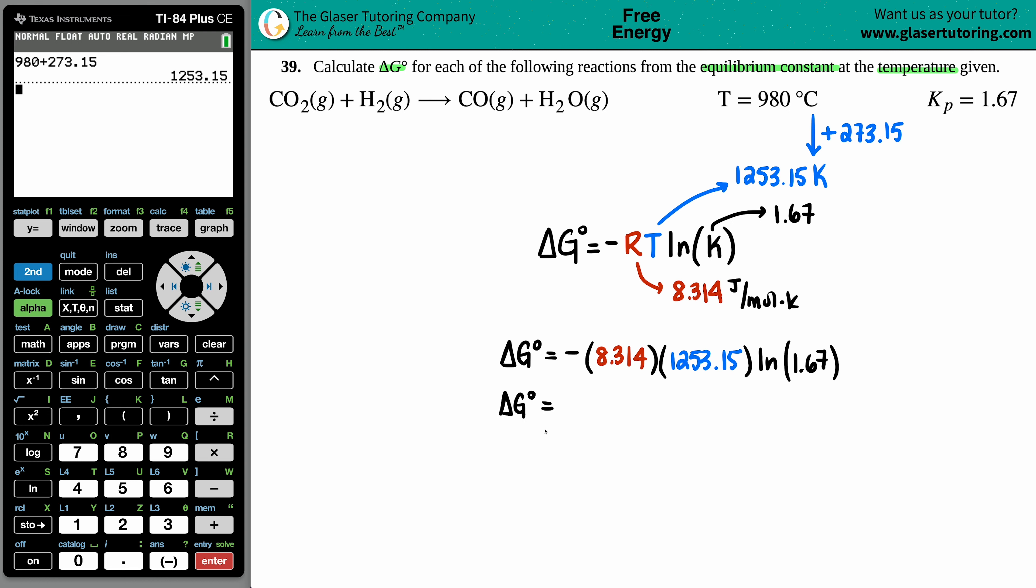ΔG equals - plug this all in one shot. It's all being multiplied; the calculator will understand what function to do first. Negative 8.314 times - actually I can grab that number to make sure I don't make mistakes - times ln(1.67), close the parentheses and press enter.